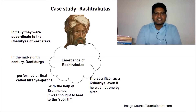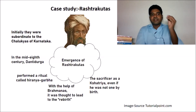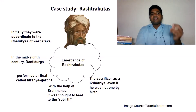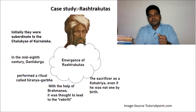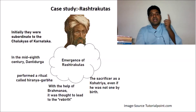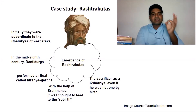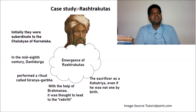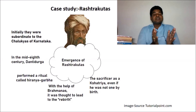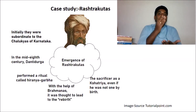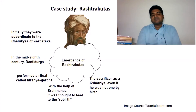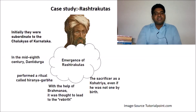In this video, we discussed how the Rashtrakutas were initially subordinates to the Chalukyas of Karnataka. Danti Durga, in the mid-8th century, ascertained his independence and performed the Hiranyagarbha ritual with the help of Brahmanas. Through this ritual, though born a non-Kshatriya, he emerged as a Kshatriya and founded a new kingdom.